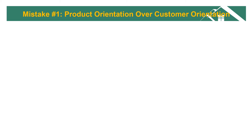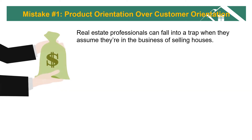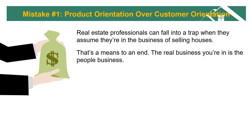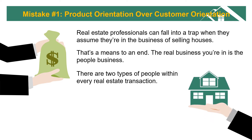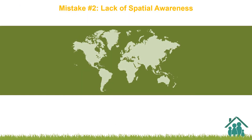Mistake number one: product orientation over customer orientation. Real estate professionals can fall into a trap when they assume they're in the business of selling houses. That's a means to an end — the real business you're in is the people business. There are two types of people within every real estate transaction: the buyer and the seller. We'll discuss the things to look for with each as we move into the essential elements of your plan.